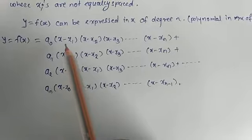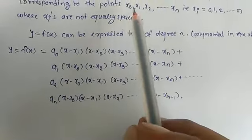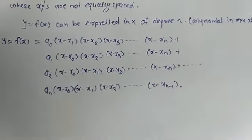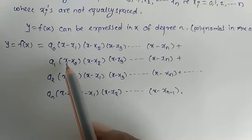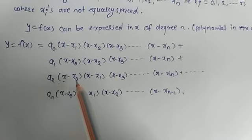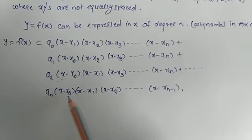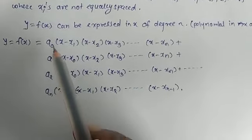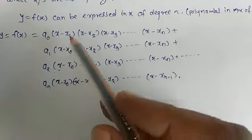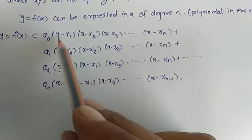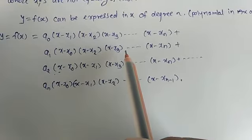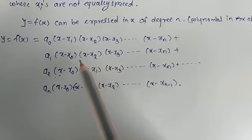The factors have been adjusted so that when we put x = x0, only the first term remains and all other terms become zero, because each of the other terms contains a factor (x0 − x0) = 0. Similarly, when we put x = x1, only the second term is non-zero and all remaining terms vanish.